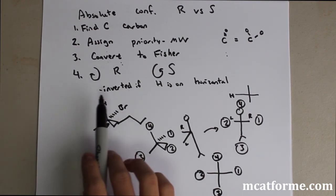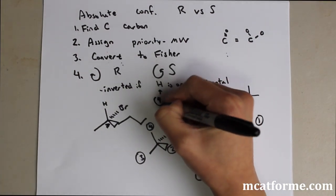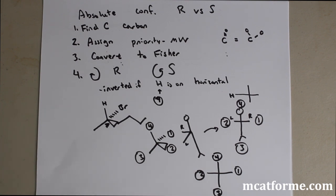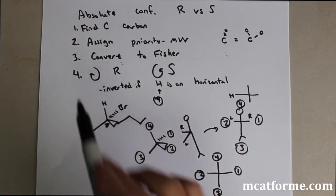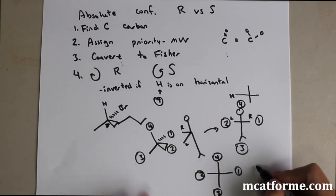Now we determine R or S. First, check whether the lowest priority group (number 4, usually hydrogen) is on the horizontal of the Fischer projection. In this case, the answer is no, so we don't invert anything. R is clockwise, S is counterclockwise. Going 1, 2, 3 traces a counterclockwise direction, so this molecule is S configuration.